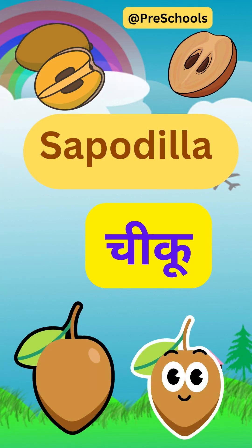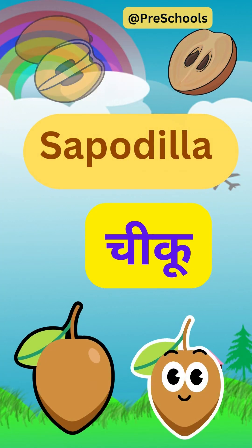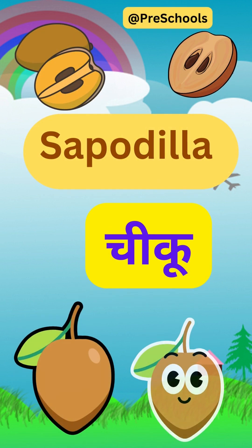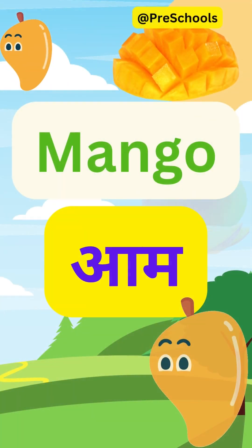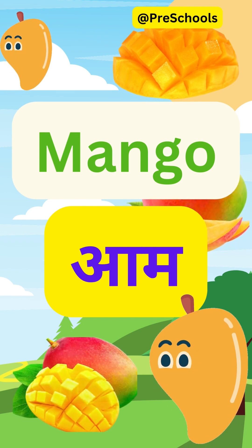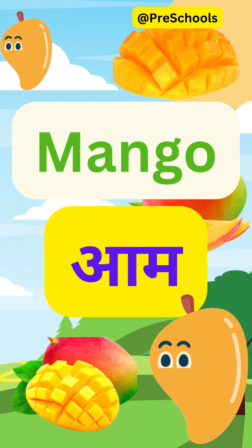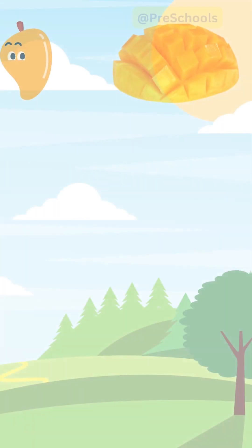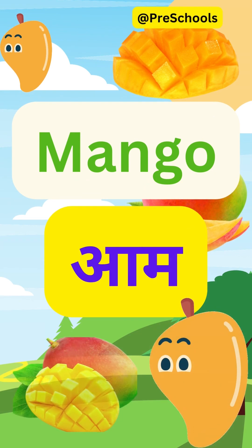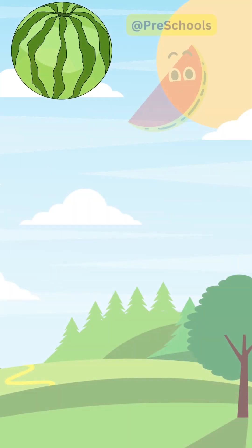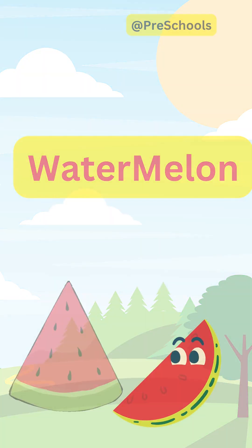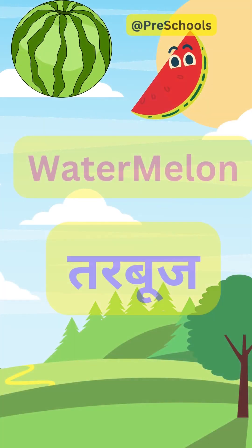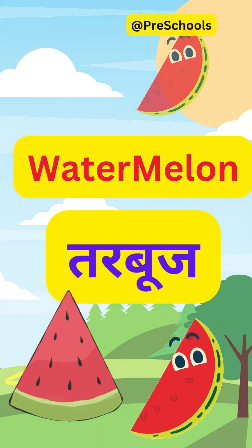Sapodilla. S-A-P-O-D-I-L-L-A. Sapodilla. In Hindi, Chiku. Mango. M-A-N-G-O. Mango. In Hindi, Aam. Watermelon. W-A-T-E-R-M-E-L-O-N. Watermelon. In Hindi, Tampooj.